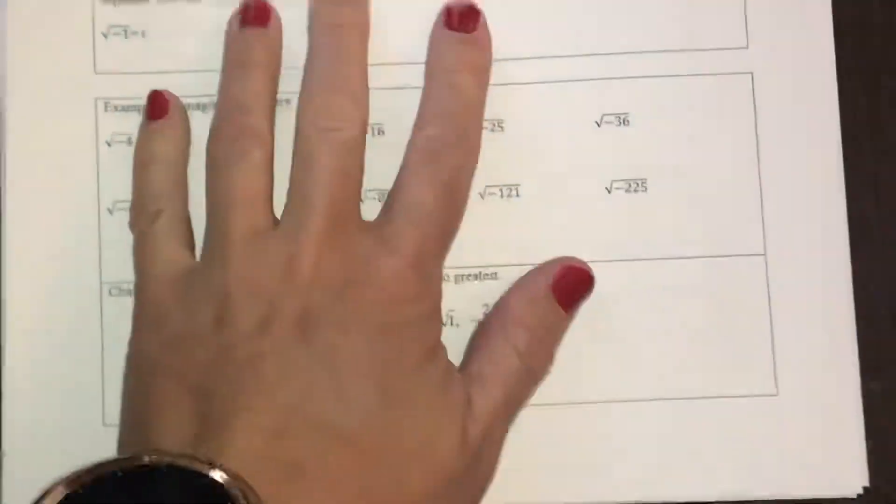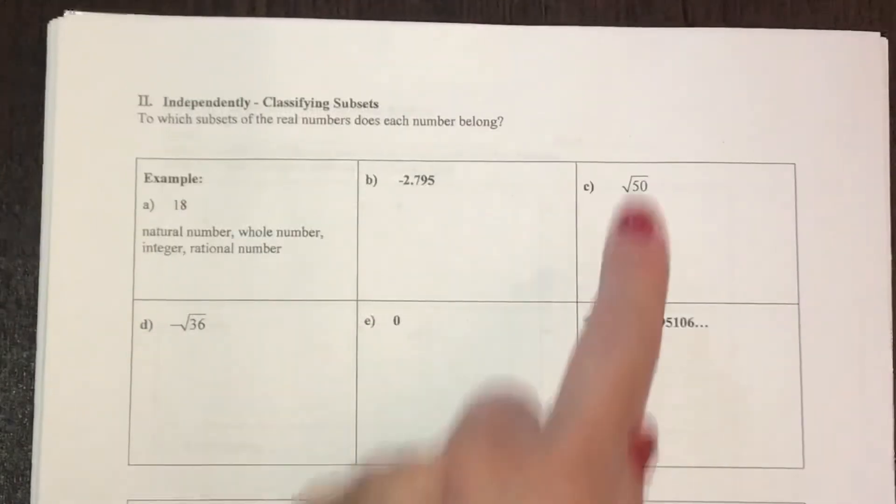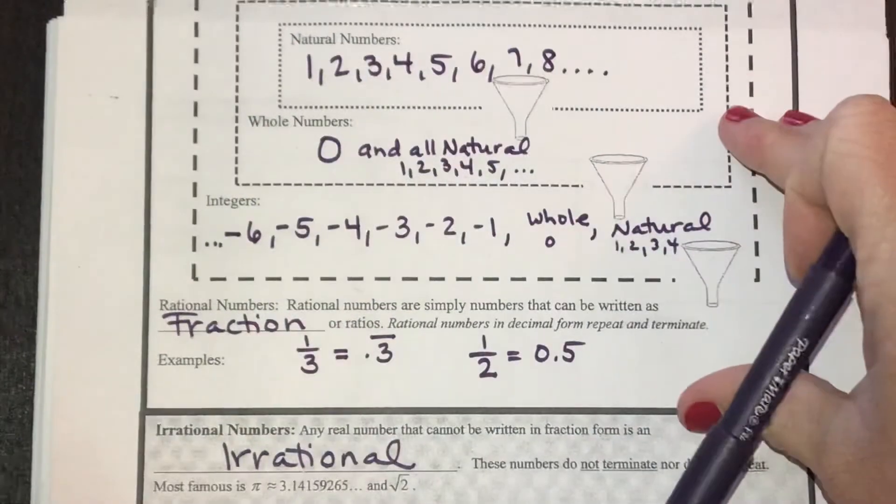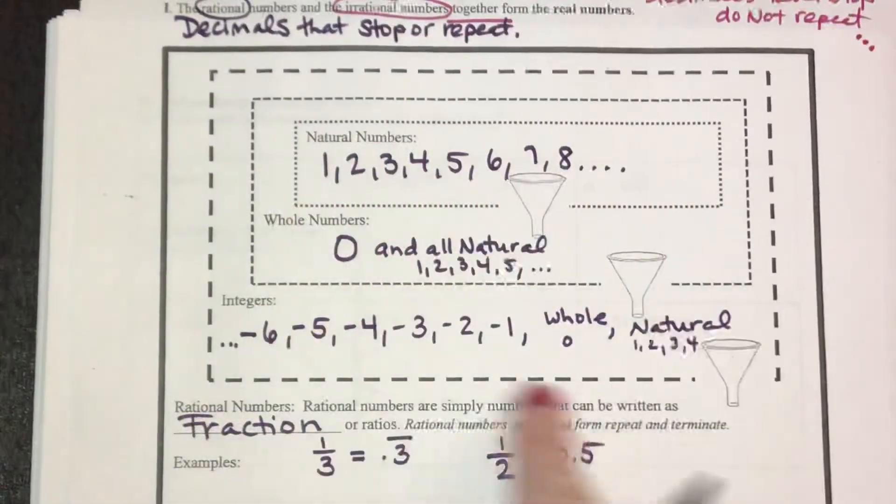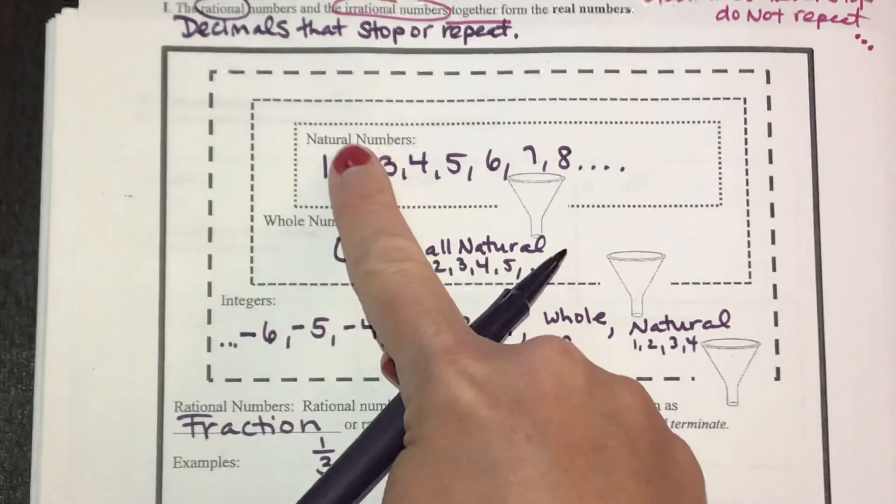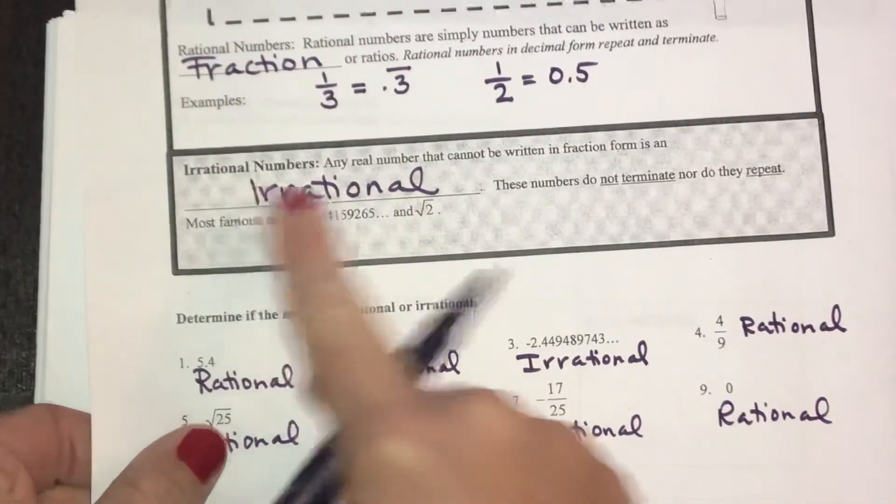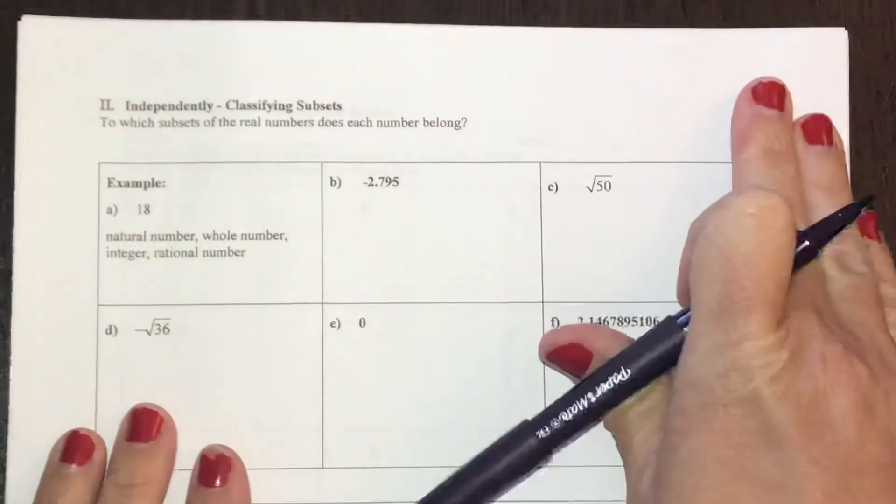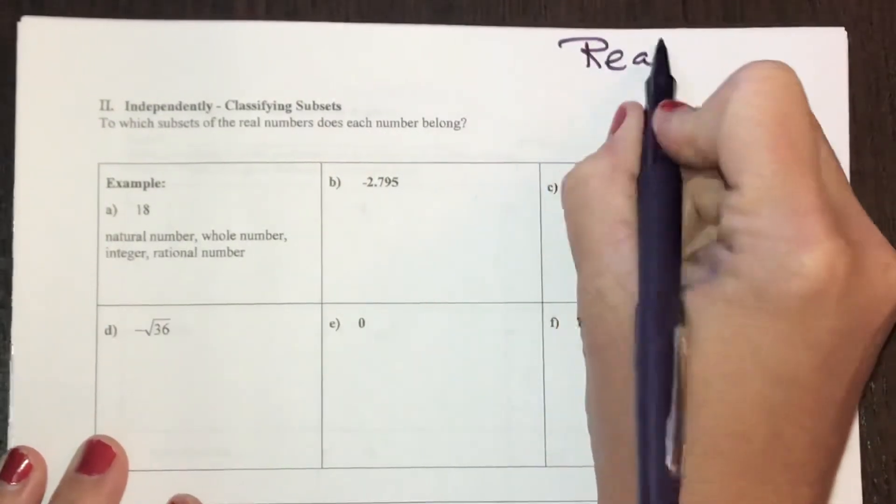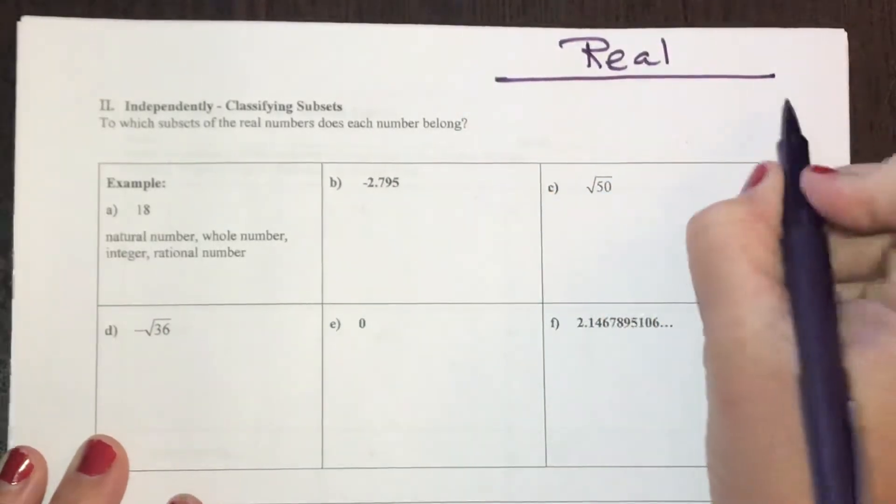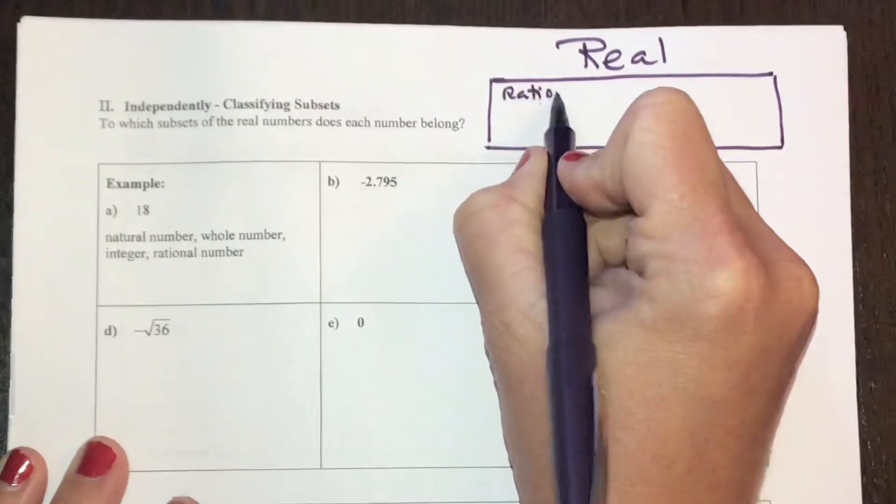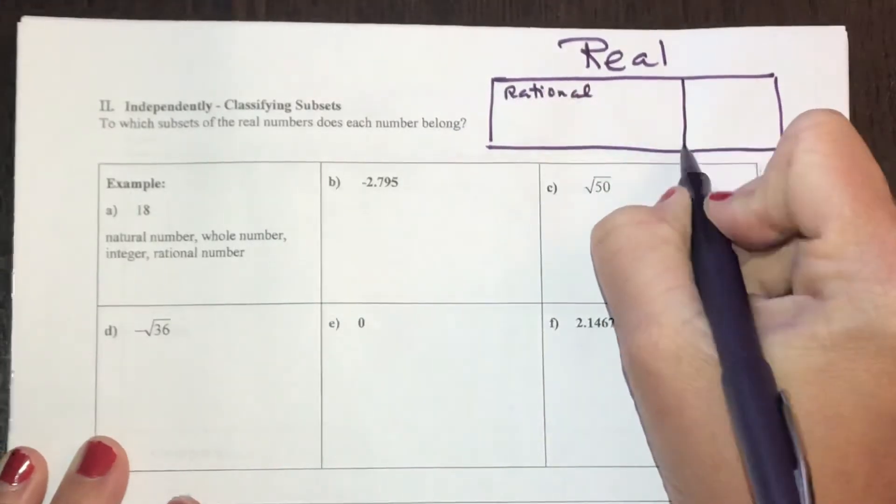If we go to the next page in your notebook, I'm going to continue on with these six examples, but I am also going to label them based on the table that we had from the front page. So within rational, the subgroups of integers, whole and natural, or irrational. What I'm going to do off on this side of my paper is give myself a reminder. My real numbers have two categories, rational and irrational.